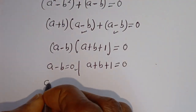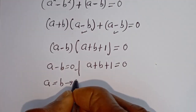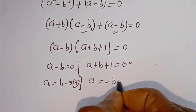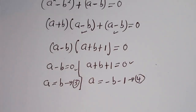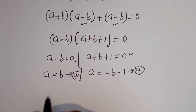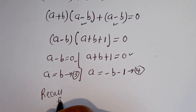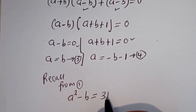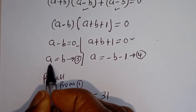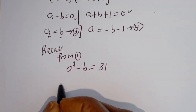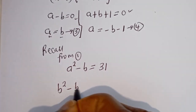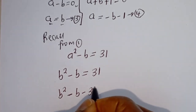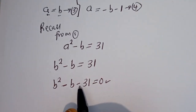From the first case, a equals b — let's call this equation 3. Recalling equation 1, a squared minus b equals 31, and since a equals b, we substitute to get b squared minus b equals 31. Then we have b squared minus b minus 31 equals zero. This is a quadratic equation.